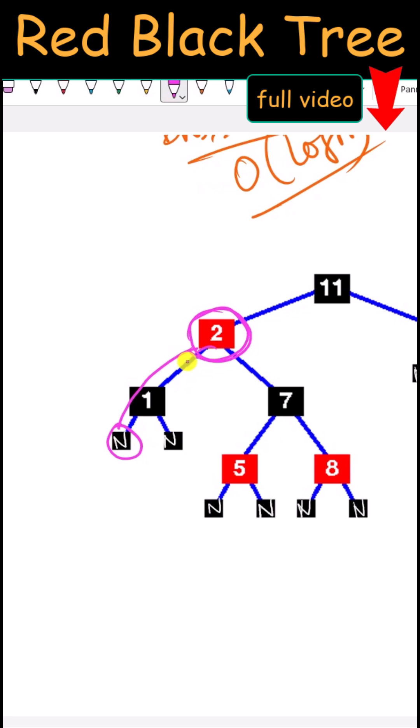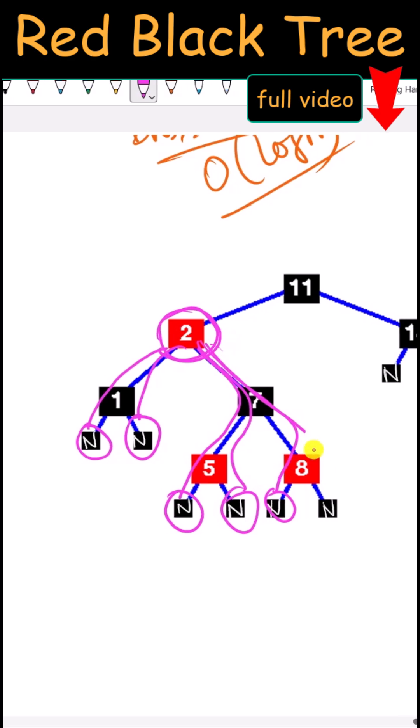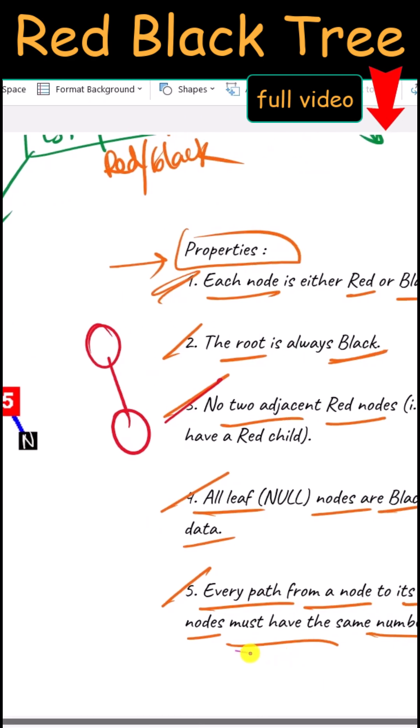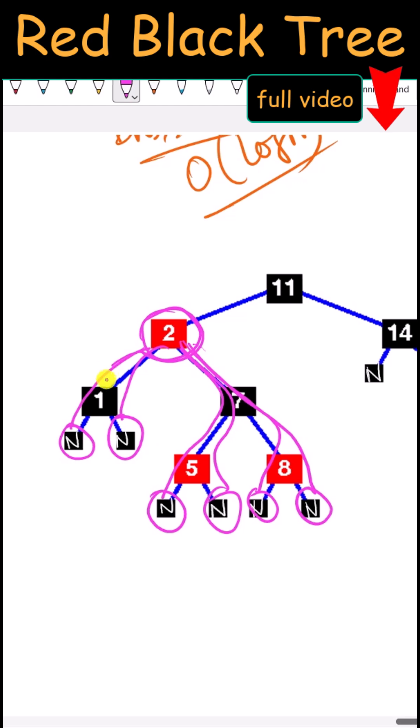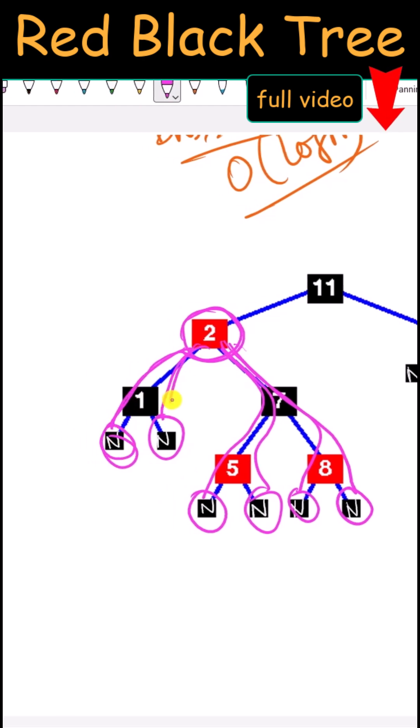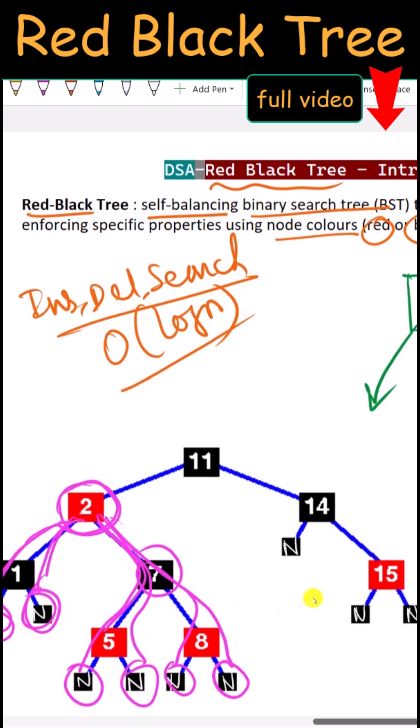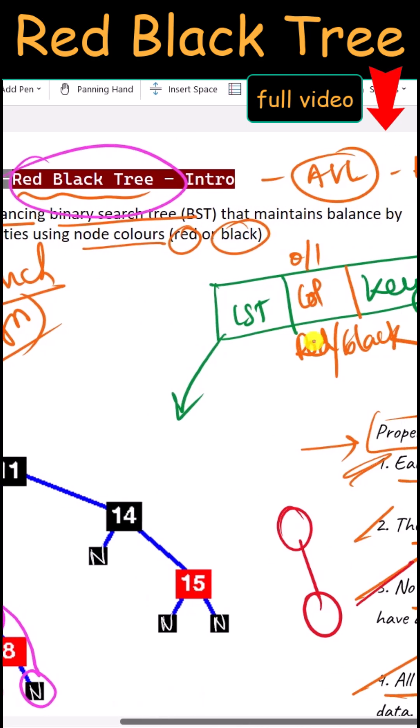We have multiple paths to reach the descendant null nodes. In each path, we should have the same number of black nodes. You can see that no matter which path we take, we have the same number of black nodes. These are all the properties of the red-black tree.